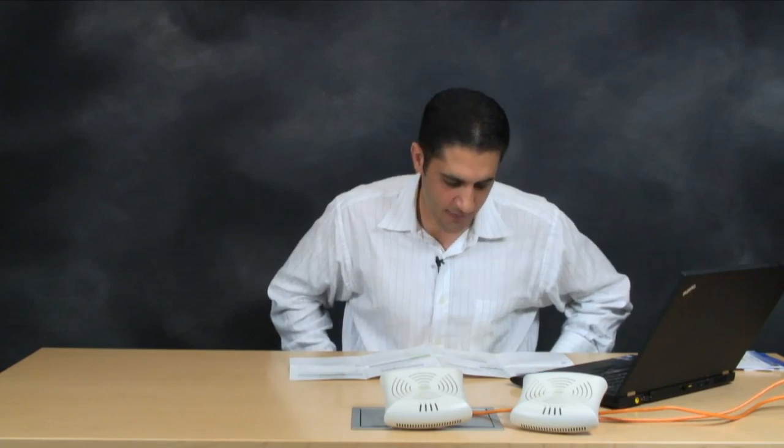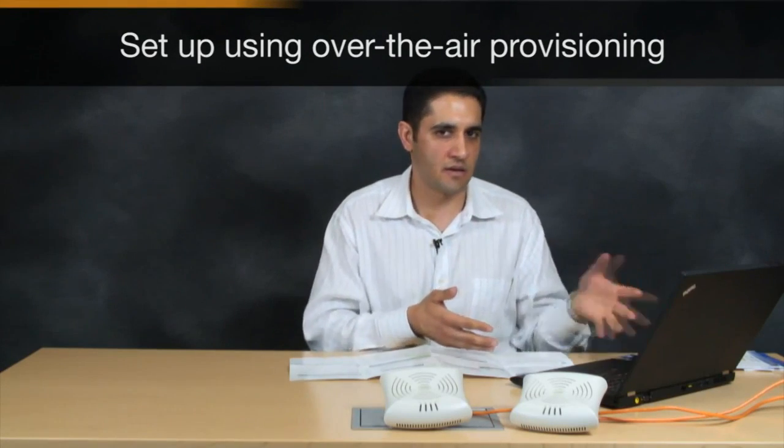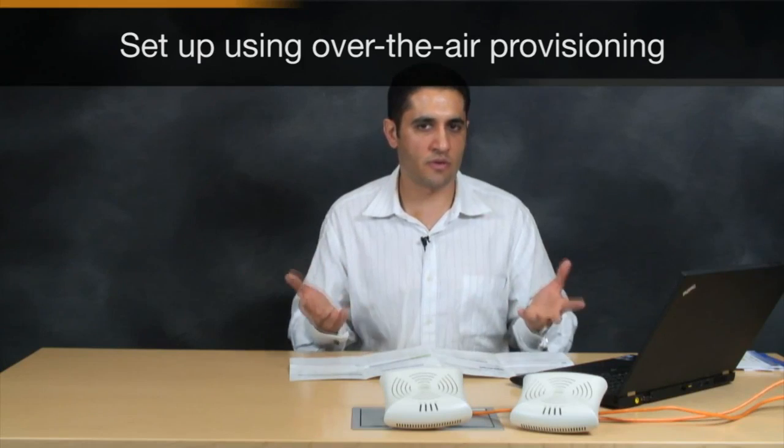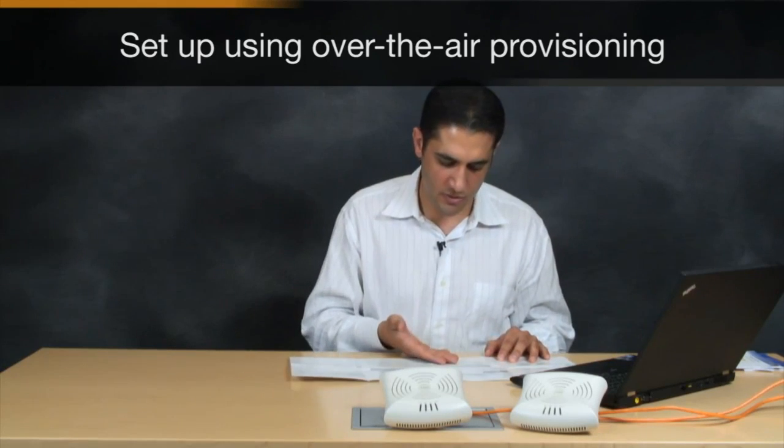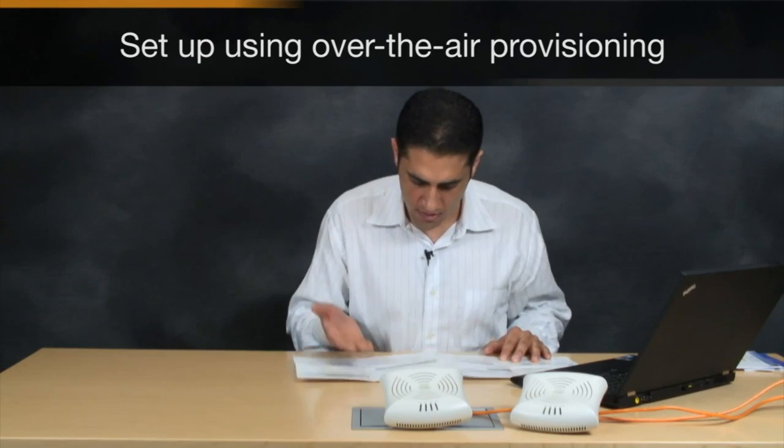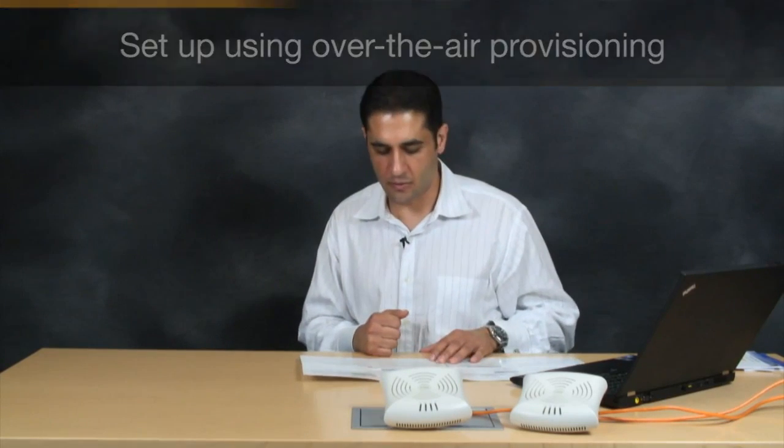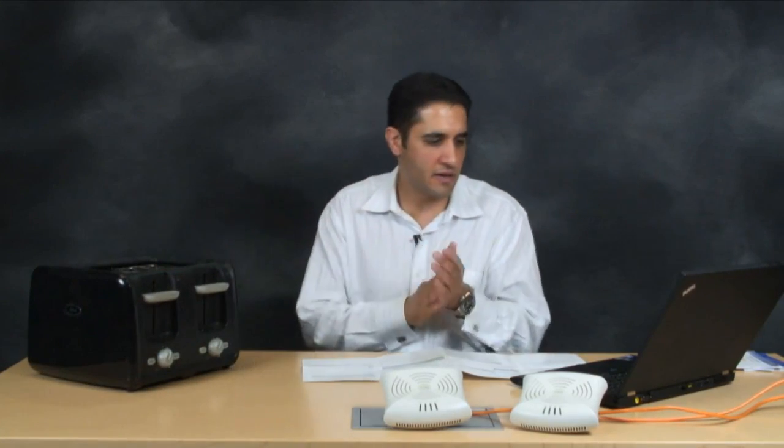It says when the APs are up, they're going to broadcast an SSID called Instant. I will use my laptop here to wirelessly connect to the AP and do over-the-air provisioning. The first thing I will do is put in my username password, specify the country code, and go through and create my network. So while the APs are powering up, I'll go ahead and get myself ready here.